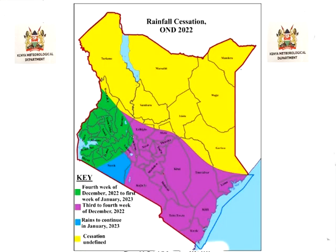The expected distribution of rainfall in the October–November–December season, as well as the cessation and onset dates, shows that the rainfall is expected to be poorly distributed both in time and space during the onset month of October and the peak month of November. The forecast indicates that most parts of the country will experience a late onset and an early cessation, especially apparent in the eastern sector.